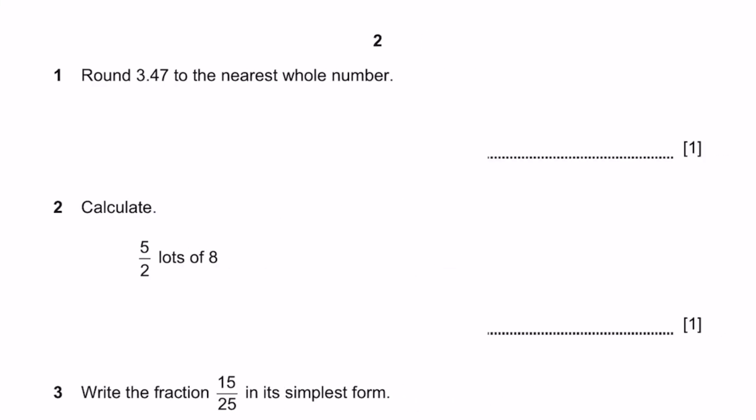Question 1, round 3.47 to the nearest whole number. So the whole number part of this is 3. Now the next number is 4 and that's less than 5, so we round it down. That will be 3.